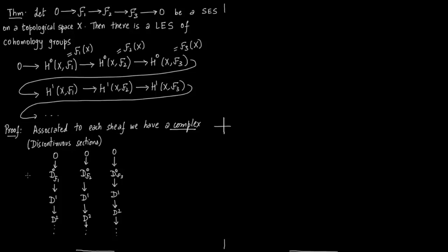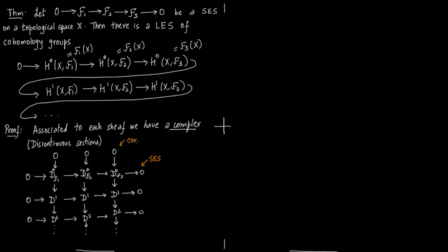Now we want to form a short exact sequence like this between the complexes. We need to understand where this short exact sequence comes from. We already know where these complexes come from for each sheaf. For the short exact sequence, notice that if you have an exact sequence of sheaves you can pass to stalks without destroying exactness.